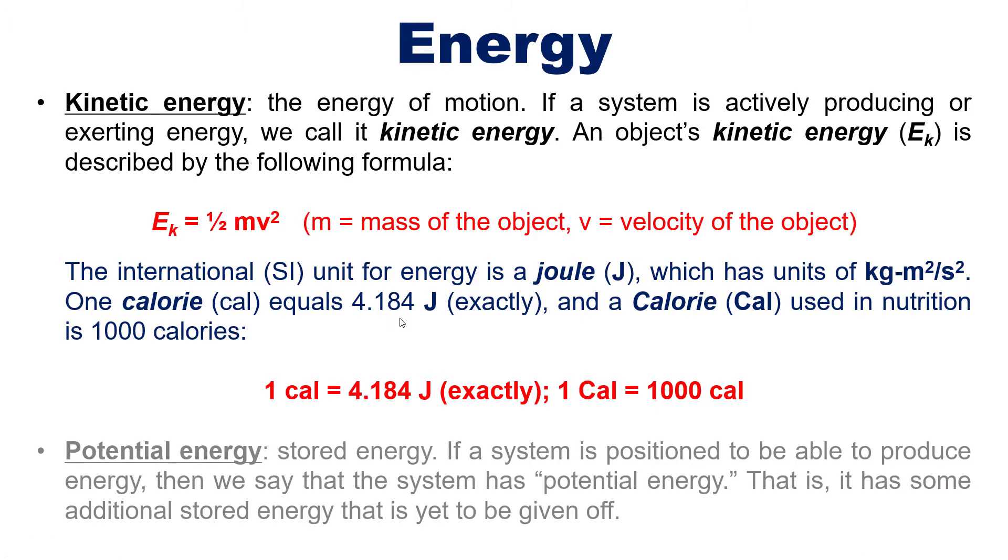The second type of energy is potential energy. That is, stored energy. If, for example, a system is positioned to be able to produce energy but is not actively using it, then we say that the system has potential energy or stored energy. That is, it has some additional stored energy that is yet to be given off.